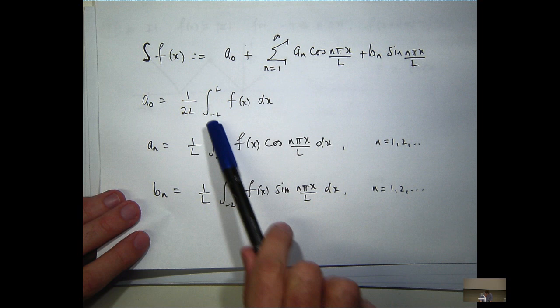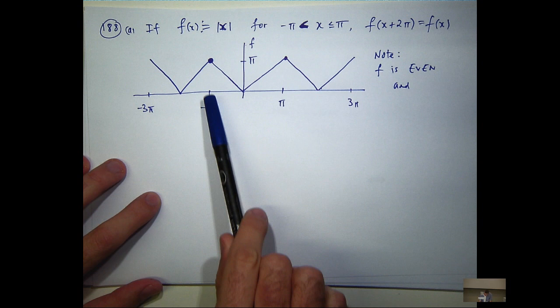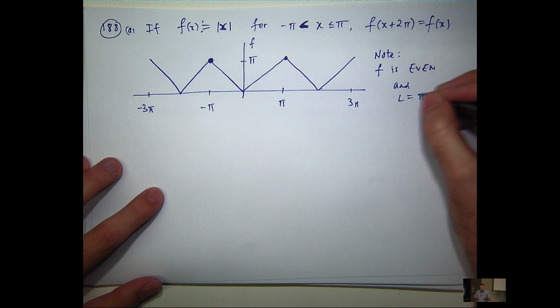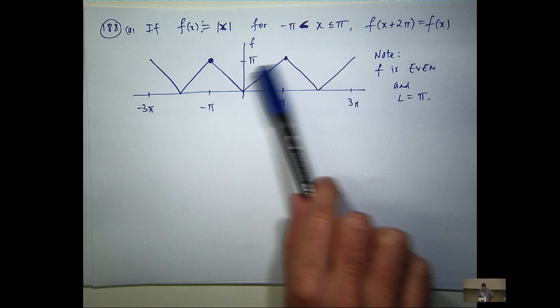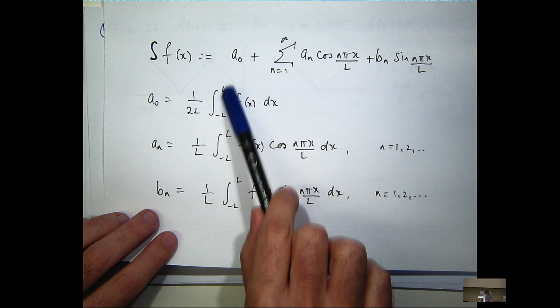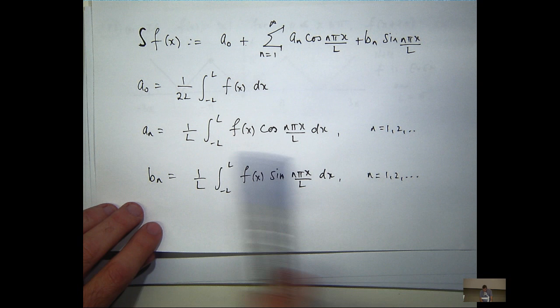We're going to apply the Fourier series formulas. First, let's calculate big L. L is just half the period; this function is periodic with period two pi, so L equals pi. With an even function, some of these calculations are going to cancel out. I'm actually going to look at the b_n's first because that's the simplest case.